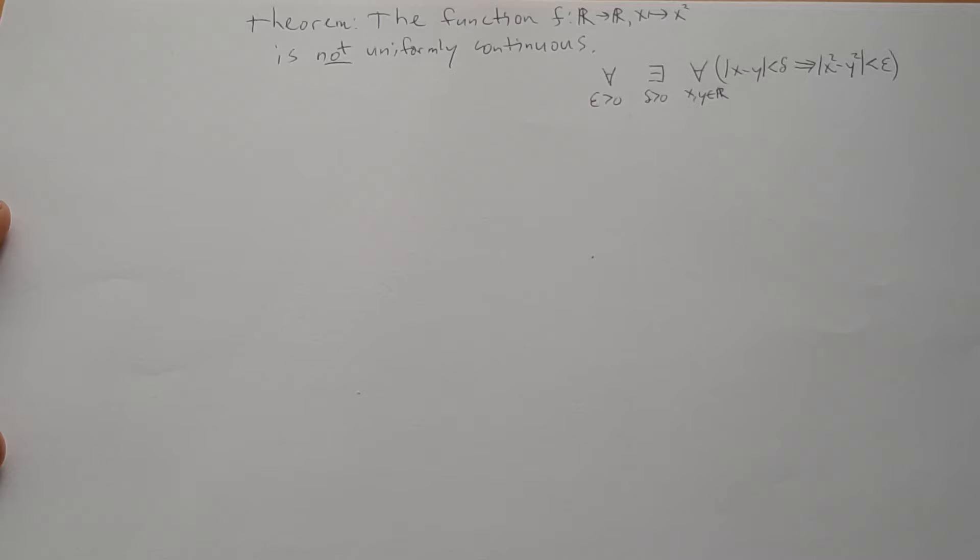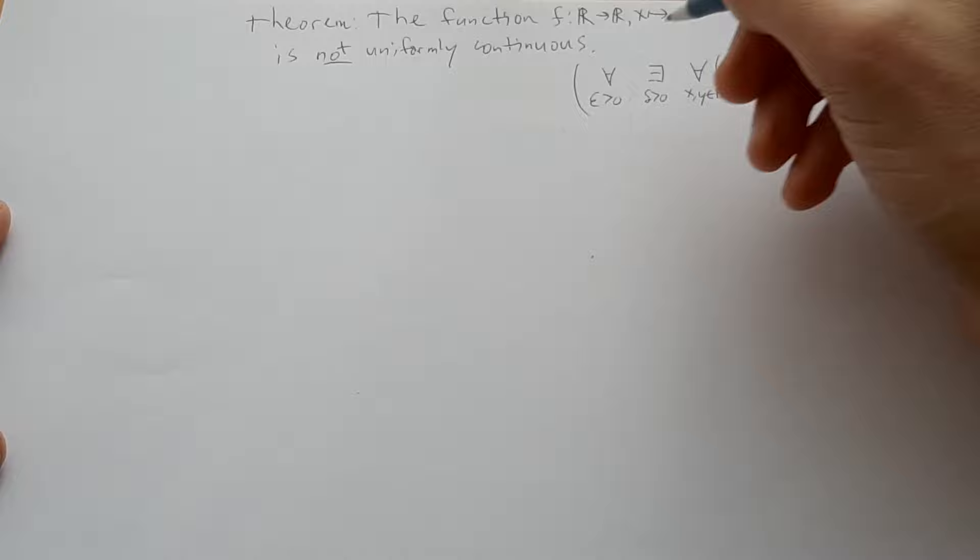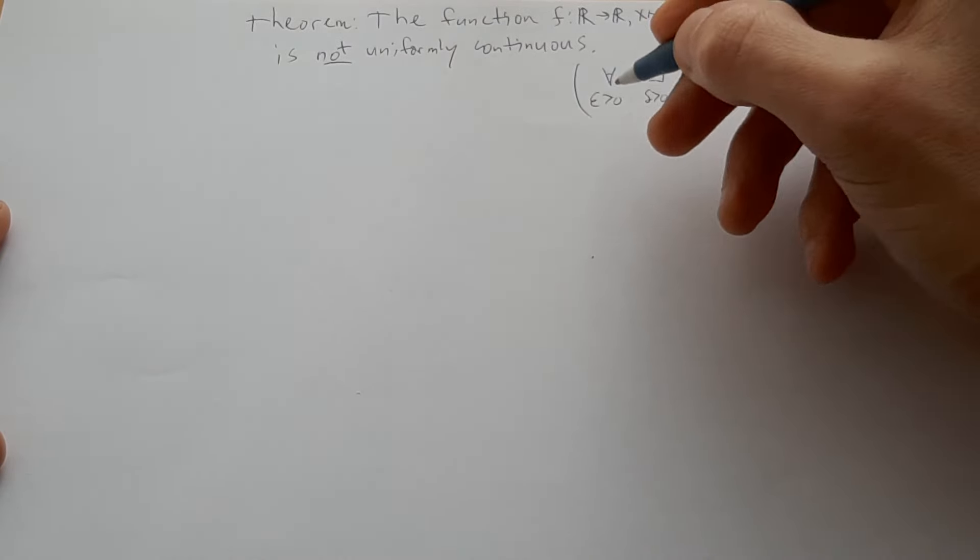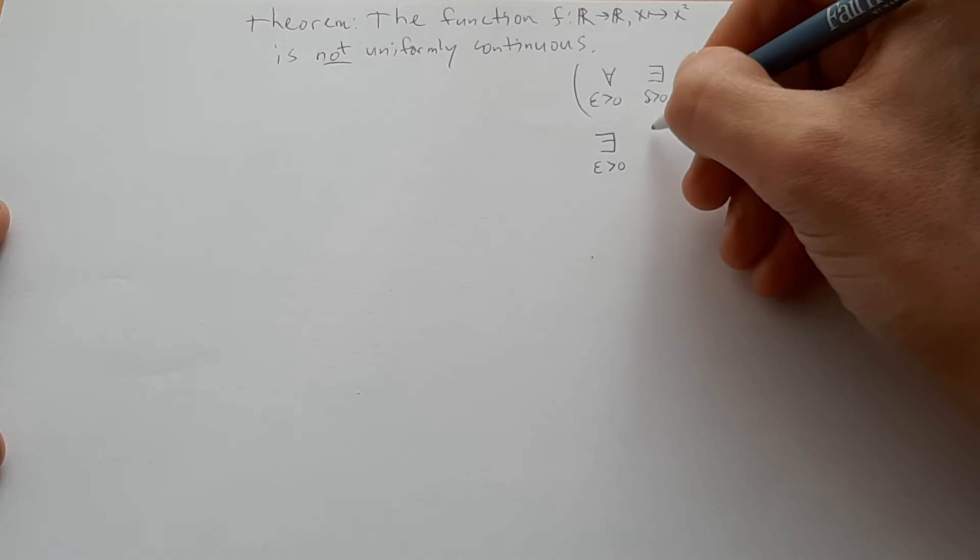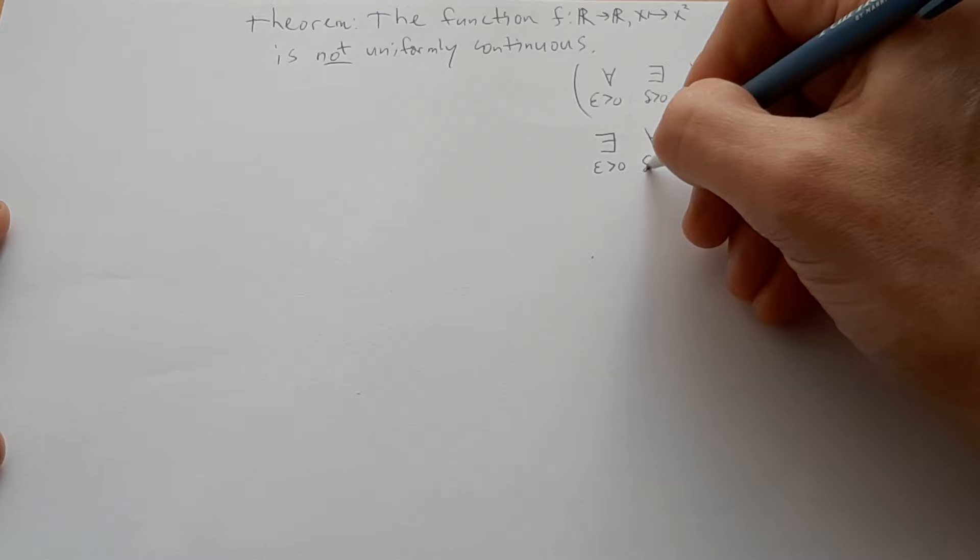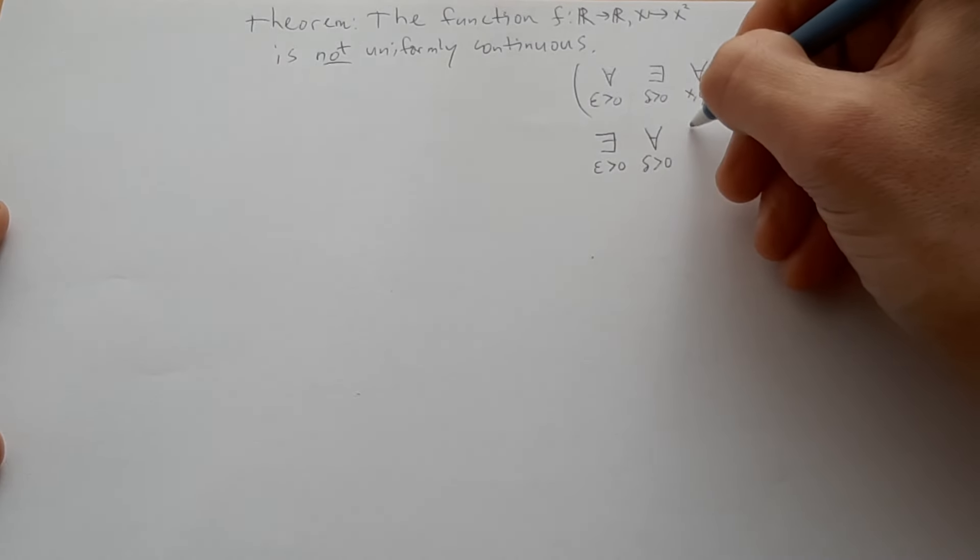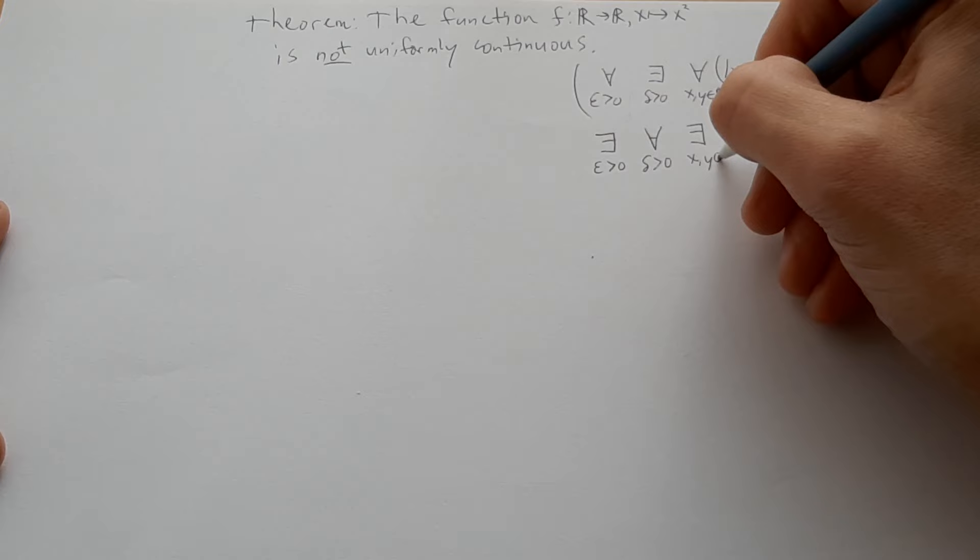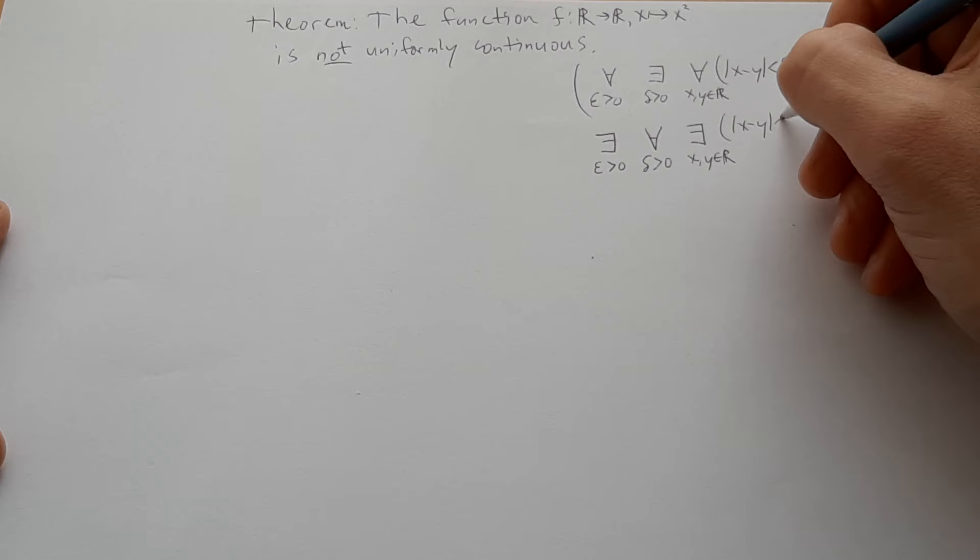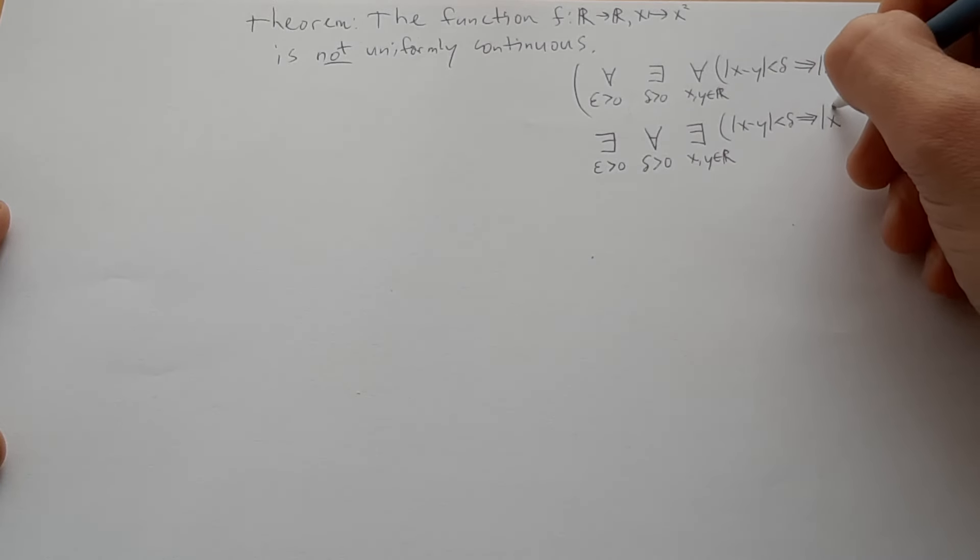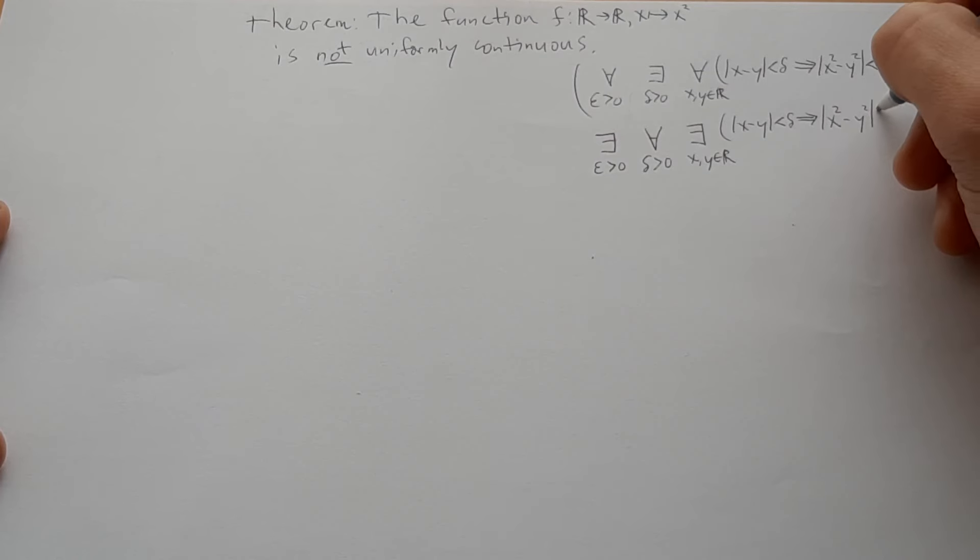But it's not, so what we want to show is the negation. We want to show the following: there exists some epsilon greater than zero, such that for all delta greater than zero, there is some x and y, some real numbers x and y, such that x and y are closer to each other than delta, but still the distance between x squared and y squared is greater than or equal to epsilon. So we want to prove that.